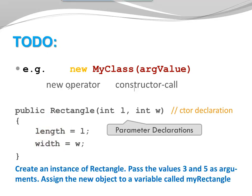Now it is your turn. Create an instance of rectangle. Pass the values 3 and 5 as arguments. Then, assign the new object to a variable called myRectangle. Pause the video. When you're ready, press continue.